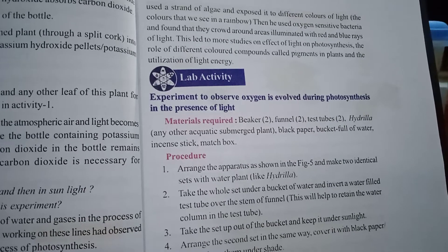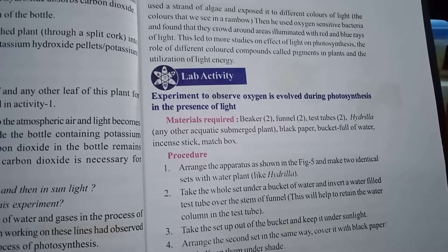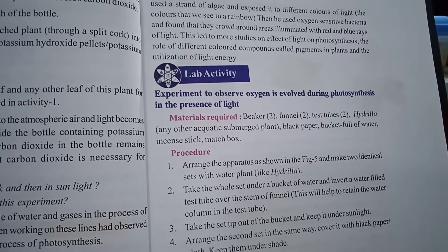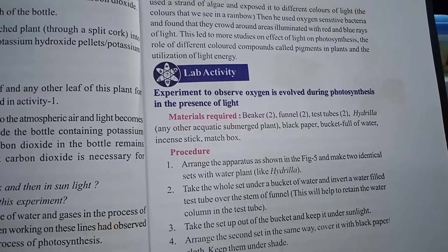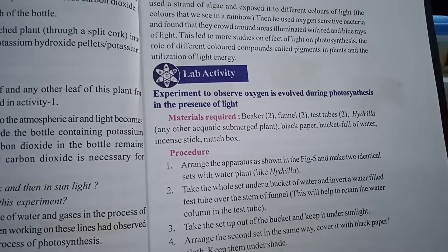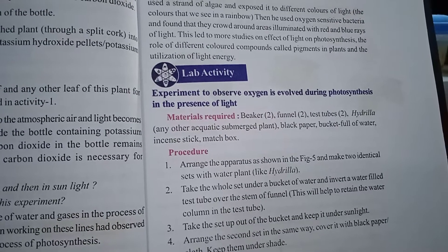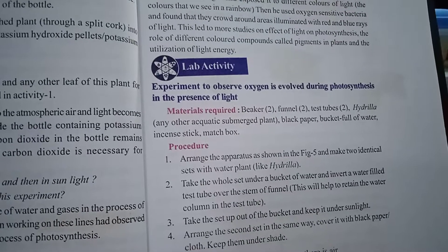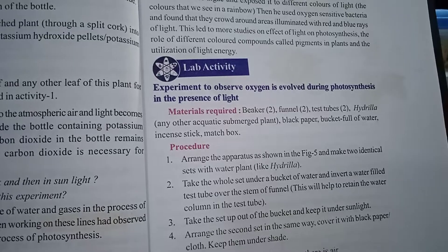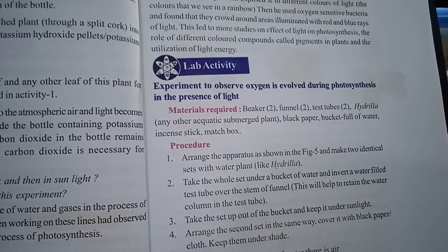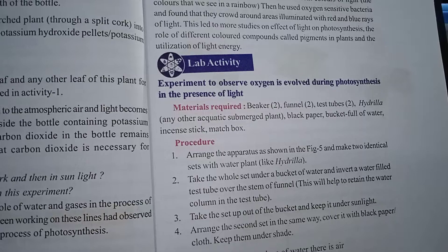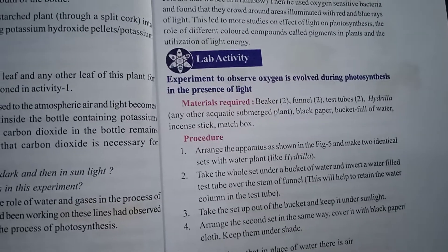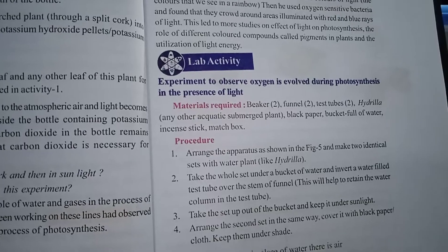In this way, both scientists found that light plays an important role in photosynthesis. We can also observe that different colored compounds are present in the green parts of the plant — they are called chlorophyll pigments. These pigments play an important role in absorbing light and are helpful in the photosynthesis process. This is the information from the sixth and seventh paragraphs. Thank you.